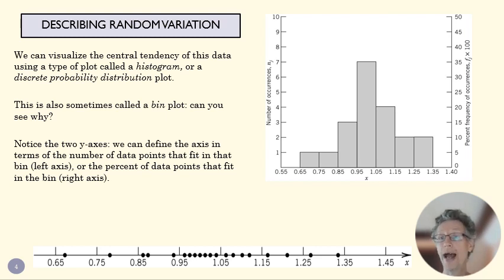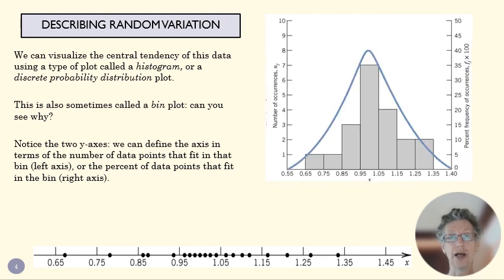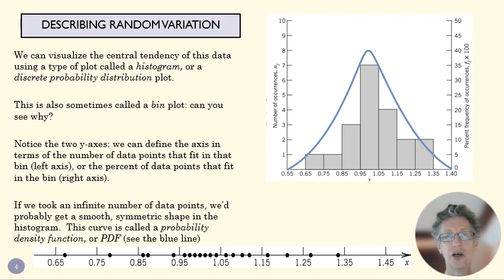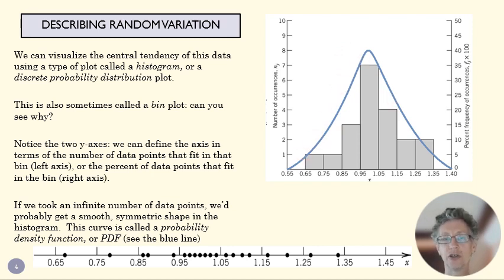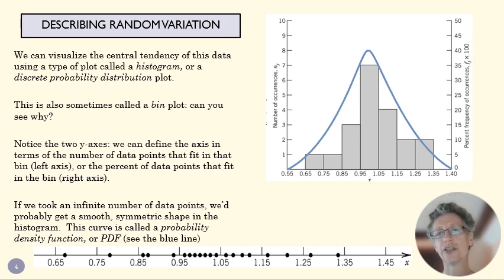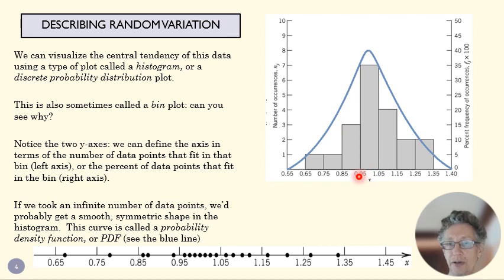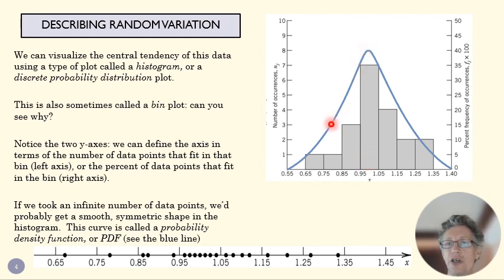What happens if we keep taking more data points? Hopefully we start to see something like this: if we take an infinite number of data points, we start to smooth out that curve, and hopefully it's a nice symmetrical curve with a central tendency. We call that a probability density function. If we imagine making the bins smaller and smaller — instead of 0.1 wide, bins from 0.95 to 0.96, then 0.96 to 0.97, etc. — our histogram would start to turn into this PDF with enough data points.